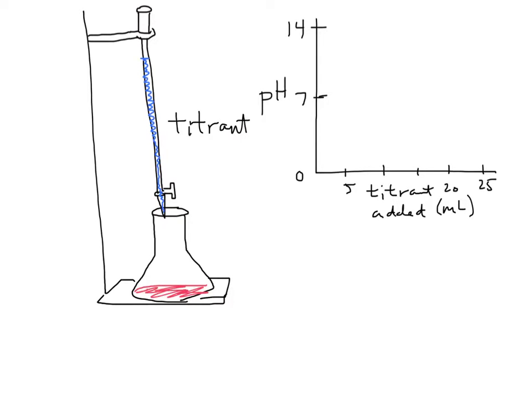Think about this question: what do you think the pH would be of that household vinegar solution before we've added anything to it? You should predict that the initial pH would be below 7, close to around 4. As we add a base to it, the base neutralizes some of the acid, which has the effect of raising the pH. If we tracked it over time, we would see what we call a titration curve develop.